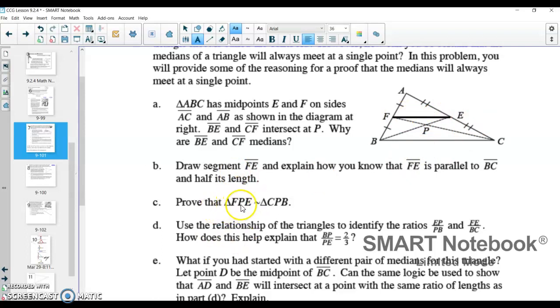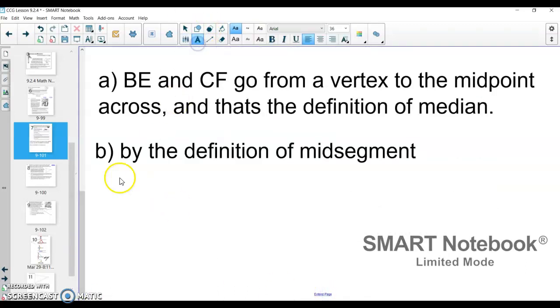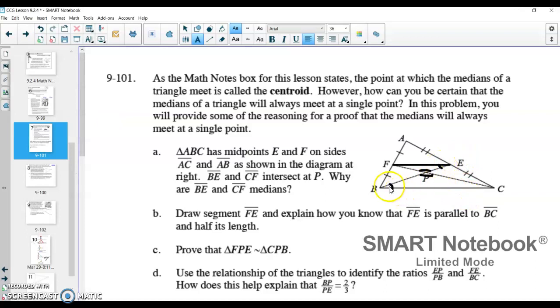All right, the next part is to prove that triangle FPE, so FPE is similar to CPB. And it's a pretty quick little proof here. We know that this angle P right down here and this angle P right here, those are congruent angles because those are vertical angles. And we know that angle E up here is the same as angle B down here because BC and FE are parallel lines. BE is a transversal cutting those parallel lines, so that must mean angle E and angle B are alternate interior angles. And so for C, we know that those two triangles are similar because they have angle-angle similarity because they shared those vertical angles and those alternate interior angles.